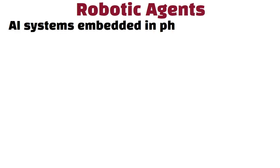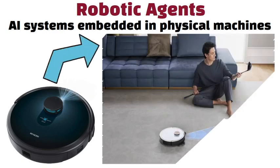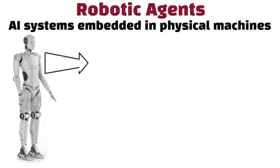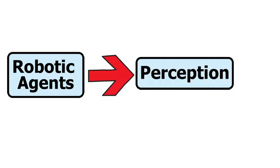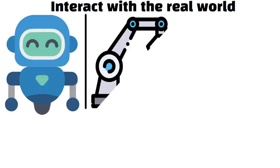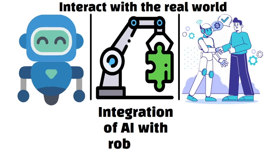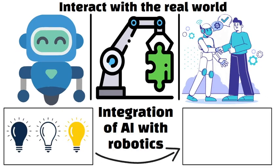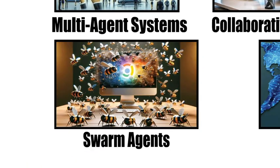Robotic agents are AI systems embedded in physical machines. They range from simple vacuum cleaners that navigate a room to advanced humanoid robots that can assist in surgery. These agents combine perception — using sensors to see and hear — with decision making and physical control. They interact with the real world by moving, manipulating objects, and sometimes even interacting with humans. The integration of AI with robotics is opening new possibilities in industries like manufacturing, healthcare, and exploration.